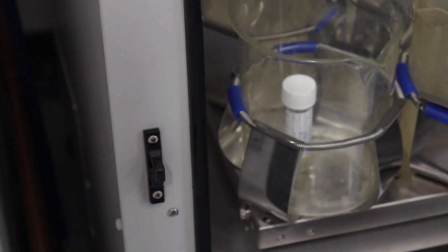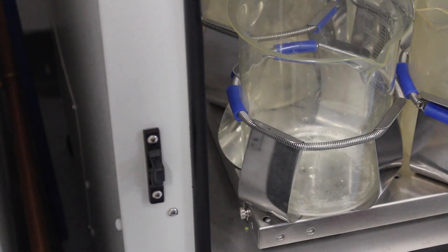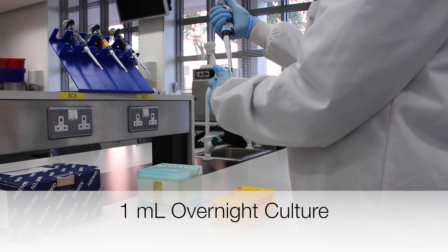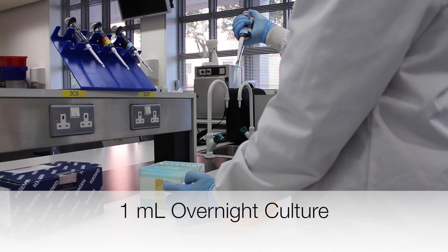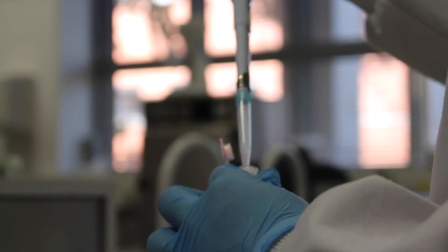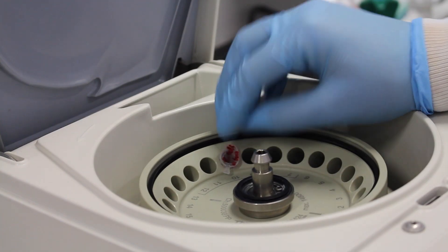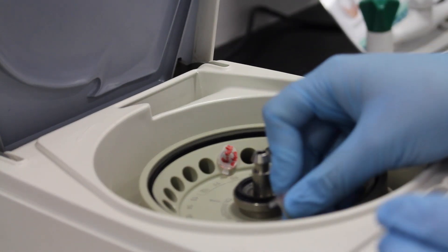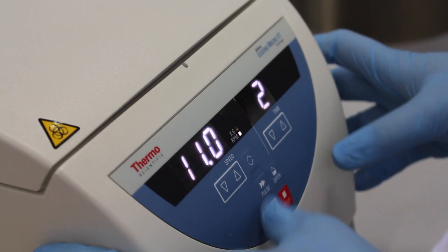An overnight culture of bacteria is removed from the incubator. One milliliter of this overnight culture is transferred into two properly labeled Eppendorf tubes. These tubes are placed into a centrifuge and centrifuged at 11,000 RPM for 2 minutes.